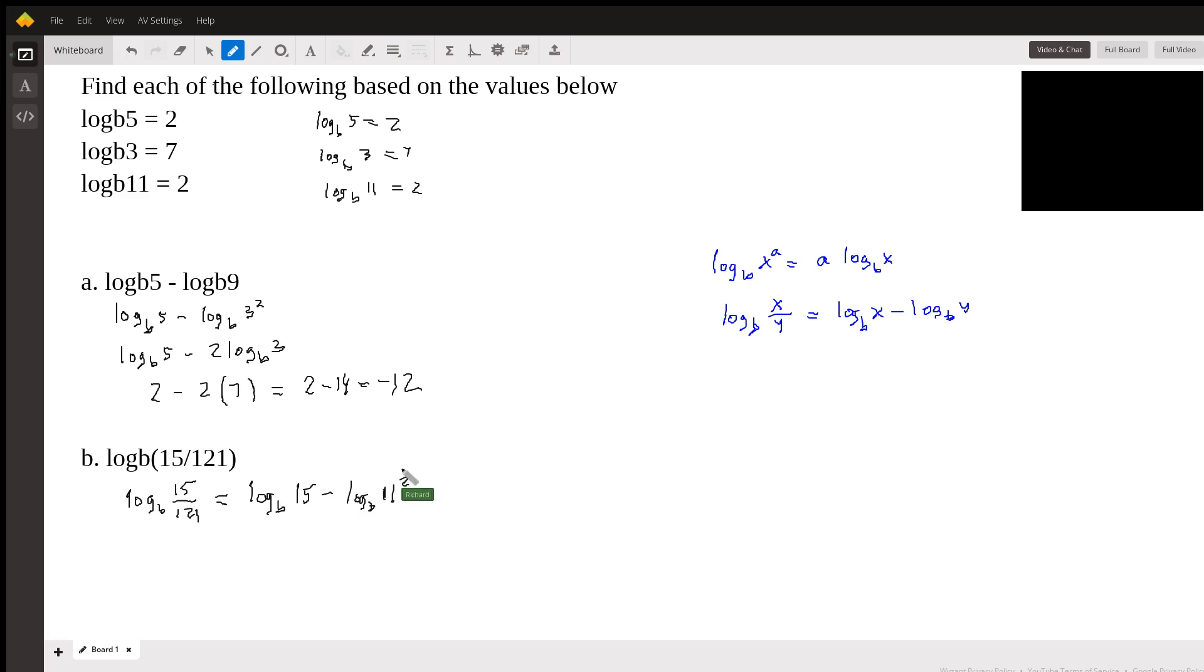So I did two steps in one line here. We first used the division rule, and then we used the power rule to bring that exponent. There's no exponent here, but we used the power rule up here to bring the exponent in front. So once again, we're using the log base B of 15, that's the log base B of 3 times 5 minus 2. So I just wrote 15 is 3 times 5, and I brought the exponent in front because of this property up here.